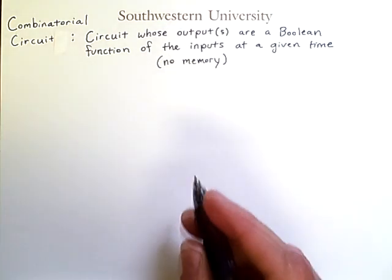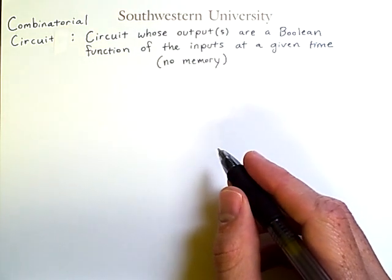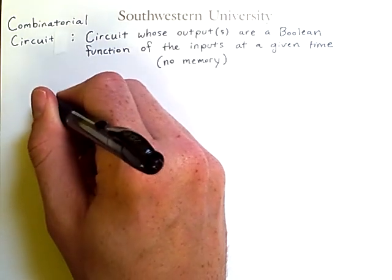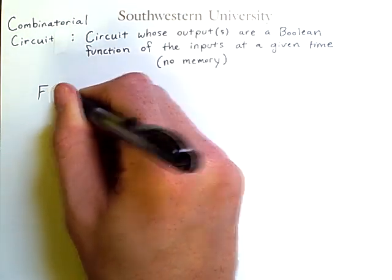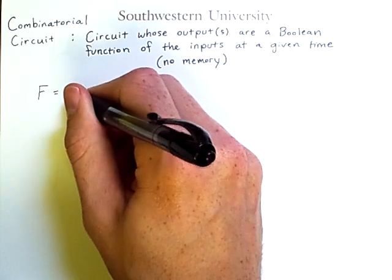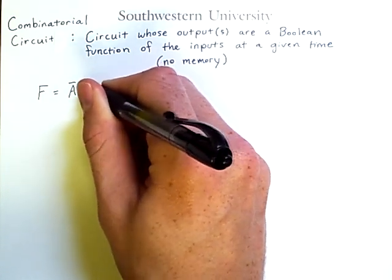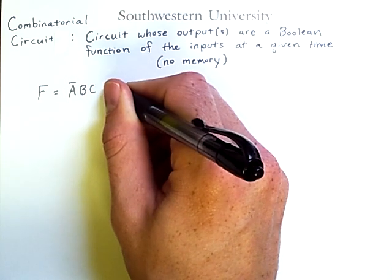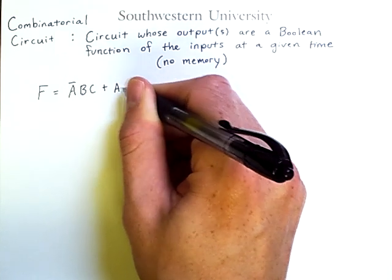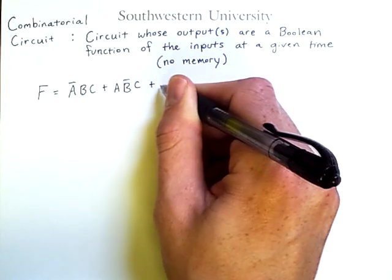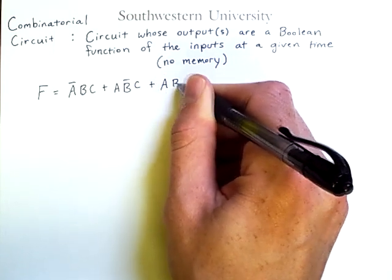An example of this is a circuit that computes some boolean expression. For example, if my output is F, I could desire a circuit that computes the result of this expression here that I'm writing down.